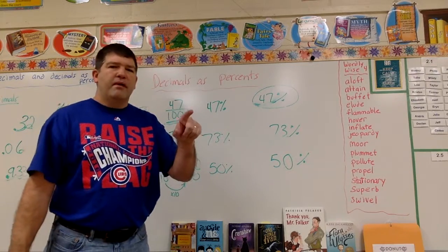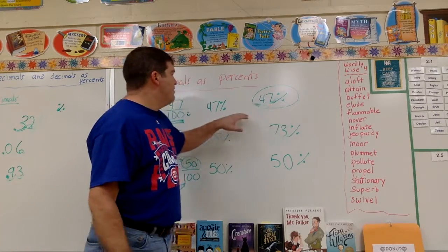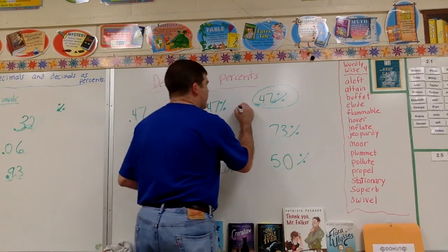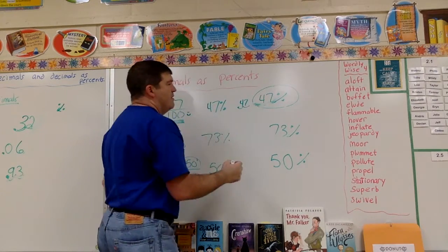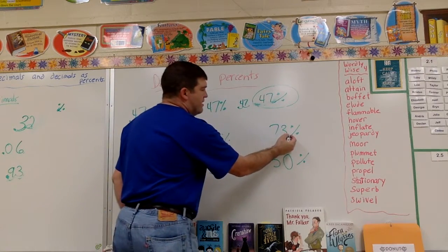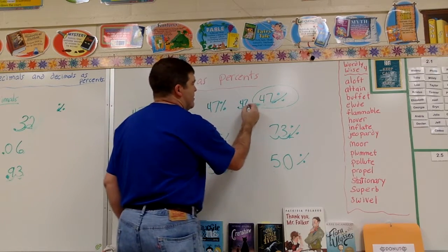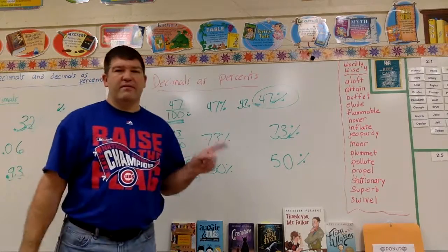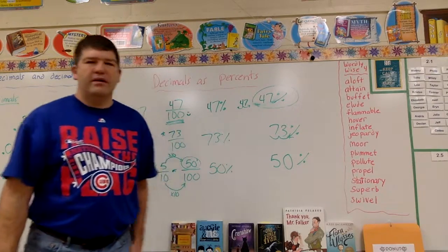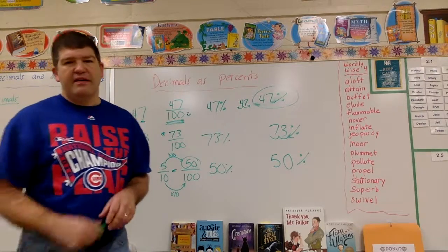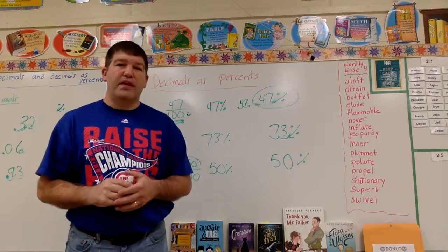To summarize: if you have a decimal and want a percent, move the decimal two places to the right. If you have a percent and want a decimal, move it two places to the left. Go ahead and watch the guided practice, then you'll have a chance to do independent practice and extra practice. Let me know if you have any questions.